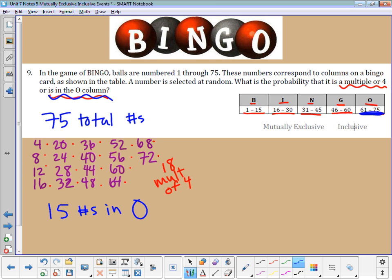And then the last thing I need to know is what overlaps or do any overlap. Well, I'm looking from 61 through 75. If I look at the numbers in my multiples of 4, 64 is in there, 68 is in there, and 72 is in there. So let's take a look at how we would figure that out. I have to take the numbers in the multiple of 4 category, that's 18 out of 75, and add to that the number in the O's, that's 15 out of 75. But I have to take away 3 because there's 3 in both.